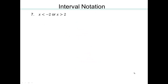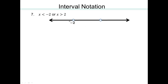Now with 'or': x less than negative 2 or x greater than 2. Negative 2 and 2 are holes. Less than negative 2 goes to the left, and greater than 2 goes to the right. Two separate pieces means two separate intervals because you have an 'or'. So it will be negative infinity to negative 2, union 2 to infinity. The U symbol means 'or' — remember that.